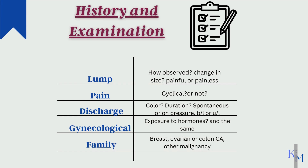Ask whether the size changes — benign lumps may change in size throughout the menstrual cycle. Ask about discharge: its color, amount, how it comes, and whether it is bilateral or unilateral. Also ask about previous pregnancies, gynecological history, and previous family history of ovarian or colon cancers.